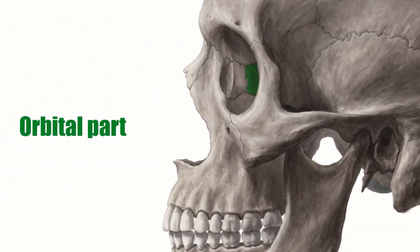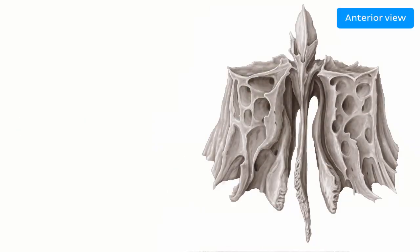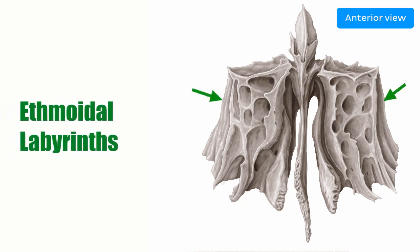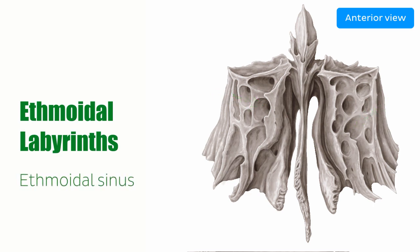This green highlight shows the orbital part of the ethmoid, which extends towards the orbit. This part forms the medial wall of the orbit. The ethmoid labyrinths lie on both lateral sides and contain numerous little cavities with ethmoid cells, which are referred to as the ethmoid sinus. These ethmoid air cells are situated between the orbital and nasal cavities.